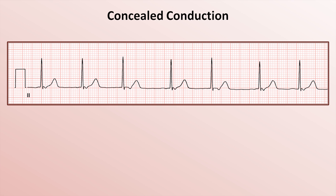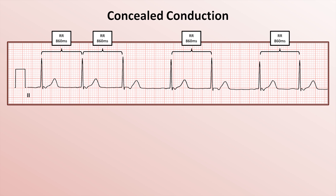First, what underlying rhythm is this patient experiencing? It's narrow complex, with a rate of around 65-70 beats per minute. The QRS complexes are not preceded by a P wave, and if you look carefully, you'll see a subtle retrograde P wave at the beginning of the ST segment immediately after the QRS complex. In the US, this is most commonly referred to as an accelerated junctional rhythm. If you look at this one more carefully, you'll notice something interesting: the rate is not constant. The RR interval is typically 860 milliseconds, except for two intervals which are 1020 milliseconds.